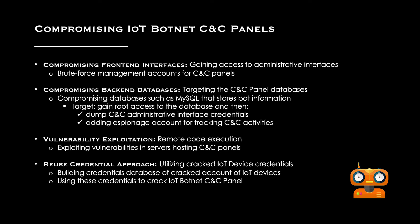Once you have detected the C&C panel, you need to go after compromising it. There are a couple of techniques we've used in our research. The first is compromising front-end interfaces — gaining access to the administrative interface. Depending on what kind of custom protocol is used to create the communication channel and how the administrative interface works, you can conduct brute force attacks to gain direct access to the administrative interface of the C&C panel.